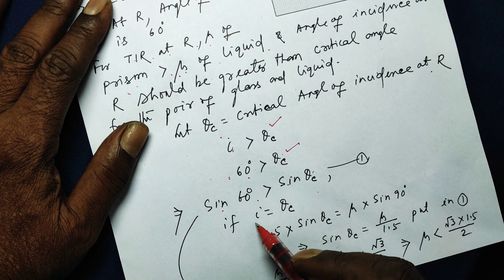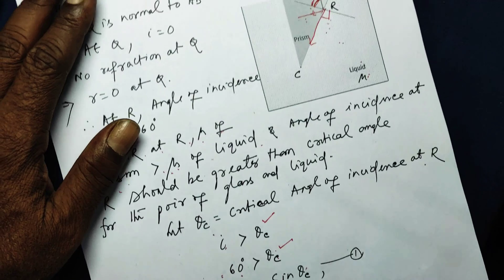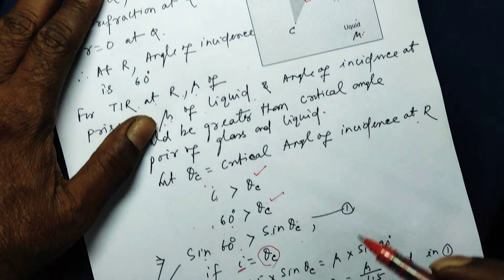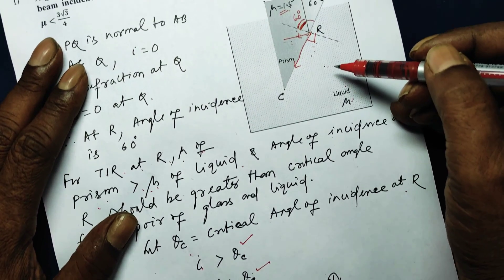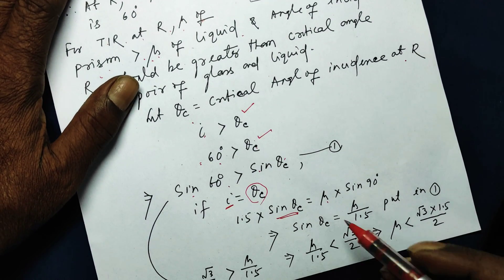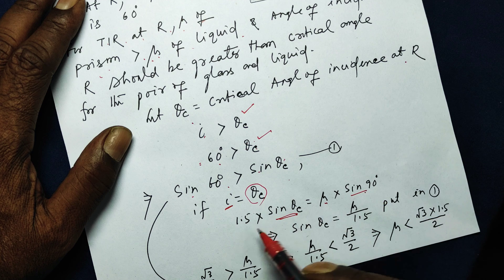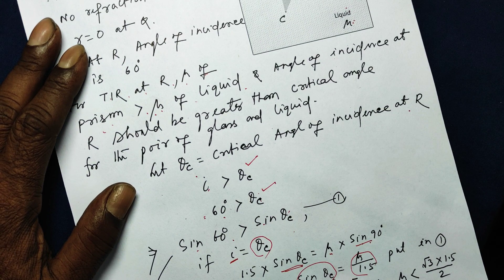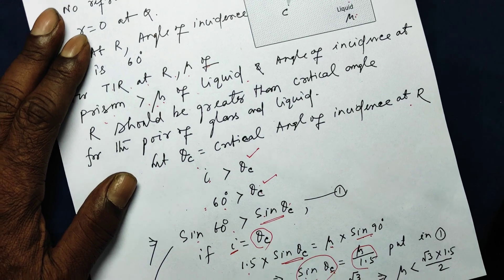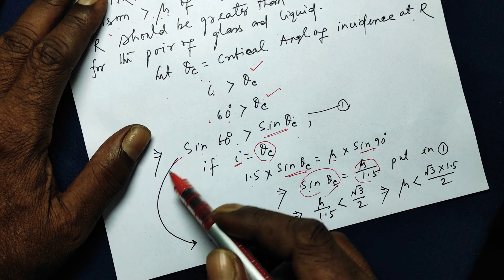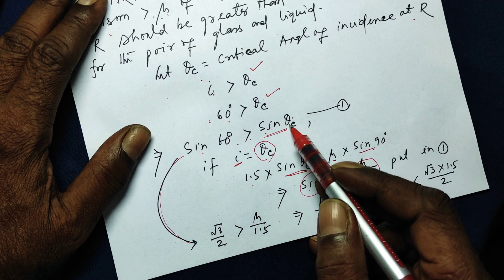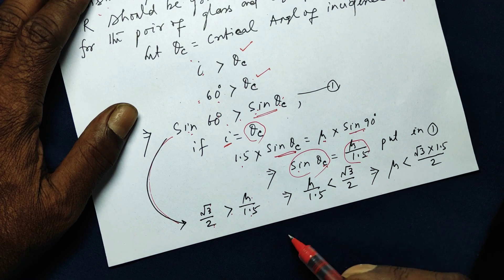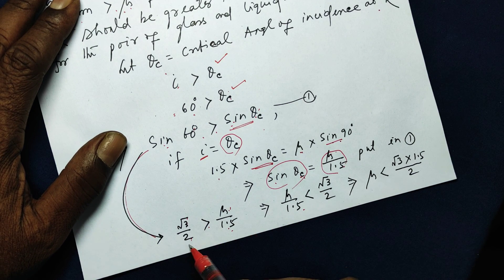We know that if the angle of incidence in the denser medium equals the critical angle, applying Snell's law: 1.5 × sin θ_c = μ × sin 90°. So sin θ_c = μ/1.5. Substituting this into the inequality: sin 60° = √3/2 > sin θ_c = μ/1.5. Therefore √3/2 > μ/1.5.